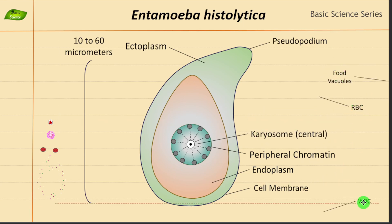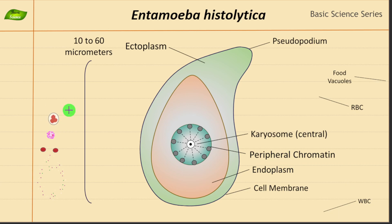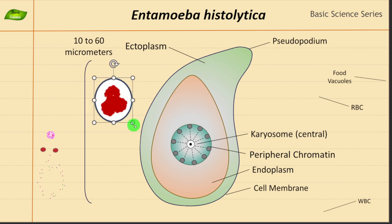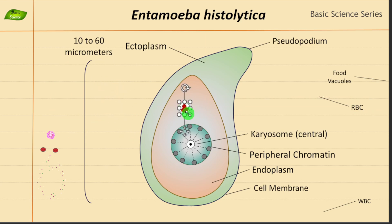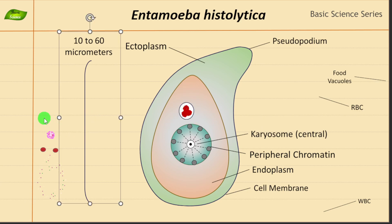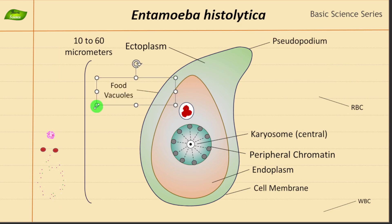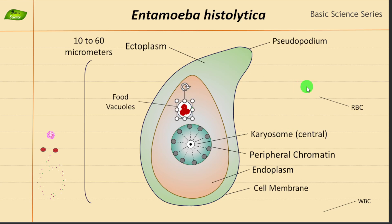Another structure inside this organism is the food vacuole. You can see red-colored food inside it — it's a circular or slightly oval structure, and that is the food vacuole. In amoeba, the food vacuole is a membrane-bound organelle involved in intracellular digestion. We can relate easily that these structures contain food and are responsible for digestion.